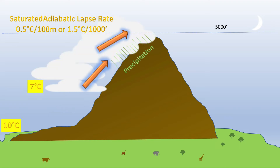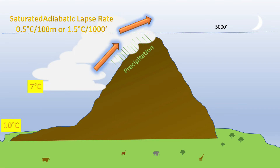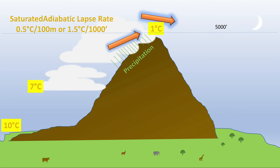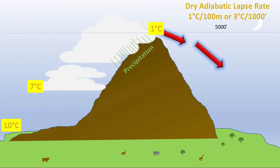As the water vapor condenses to cloud, it releases latent heat, and further lifting of the air causes it to cool at the lower saturated adiabatic lapse rate of 0.5 degrees per 100 meters. Precipitation on the windward side causes the air to lose most of its moisture by the time it reaches the mountain top.